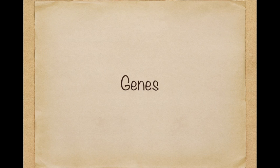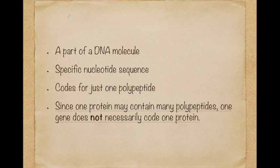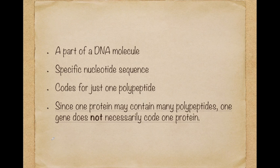First of all, we're going to see what is a gene. A gene is part of a DNA molecule. It is a specific nucleotide sequence that codes for just one polypeptide. We said that the nucleotides have a nitrogen-containing base, and all the other parts of DNA nucleotides are the same. So when we write a DNA sequence, we don't write all the structures of the nucleotide — we just write the letter of the base, because we know that the rest of the structure is the same.